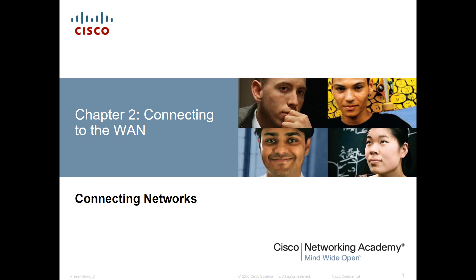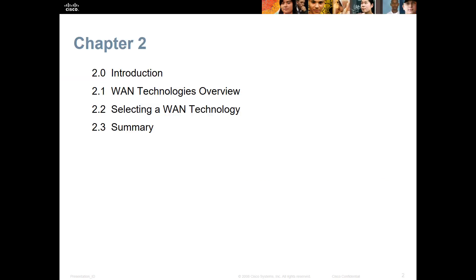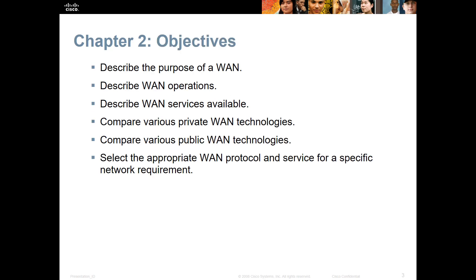Welcome to my Cisco Connecting Networks video. This is the fourth video set for the CCNA material. In this video we're doing chapter 2 review: connecting to the WAN. Connecting Networks is the WAN course that used to focus just on WAN technology. We're looking at different WAN technologies and how to select the WAN technology, describing the purposes of WAN, its operations, its service areas, and comparing both private and public WAN technologies, ending with how to select the appropriate technology.